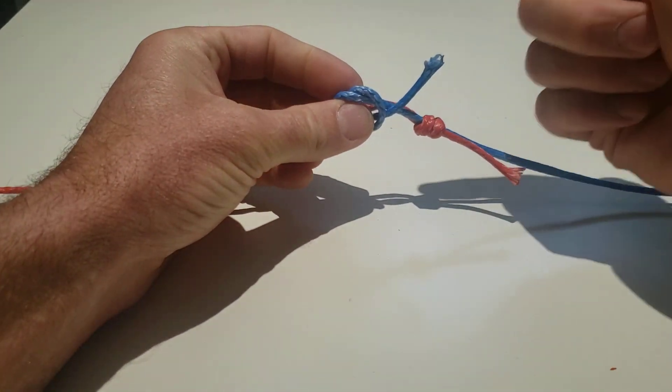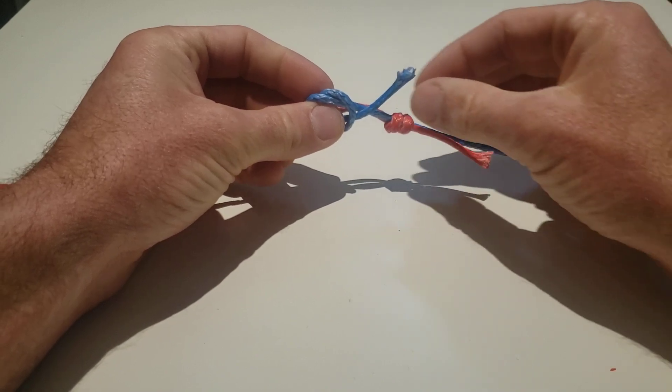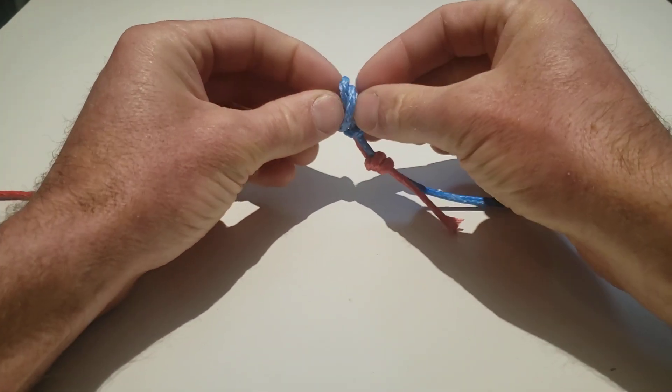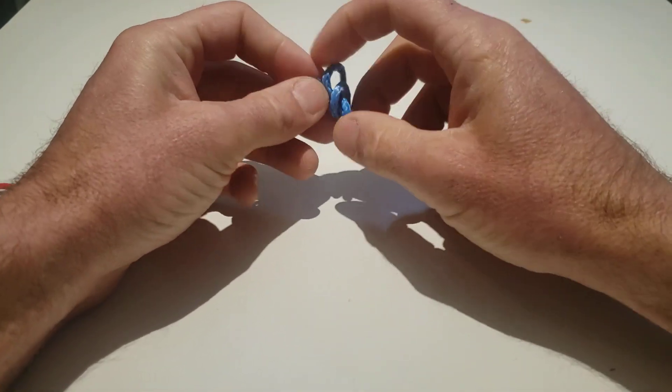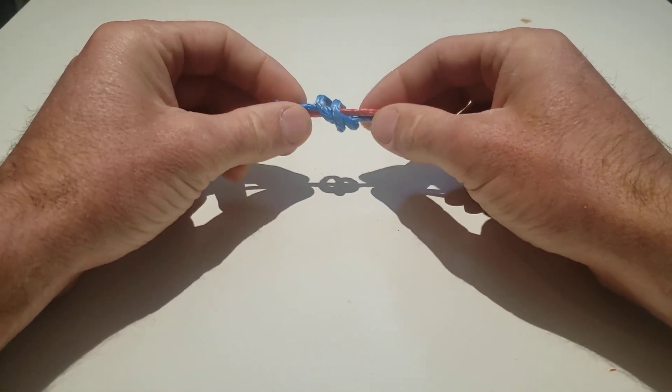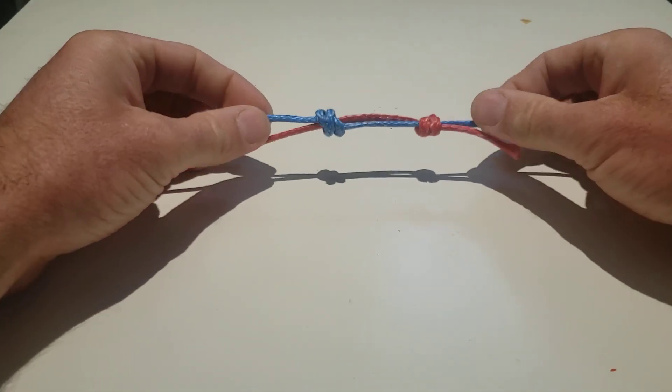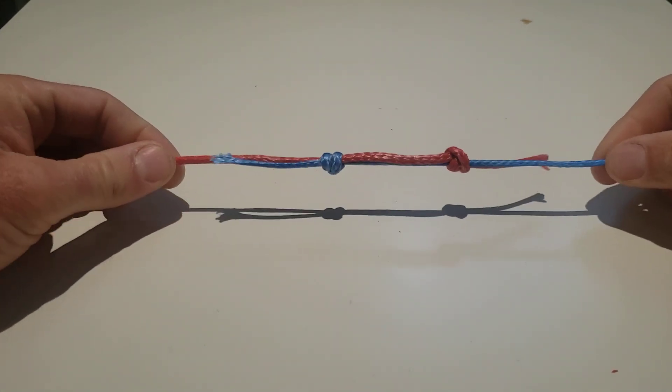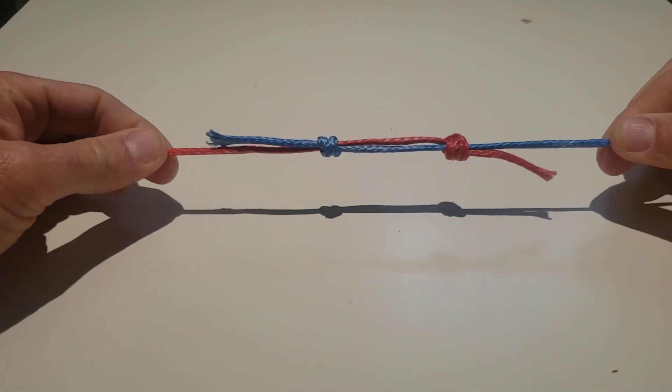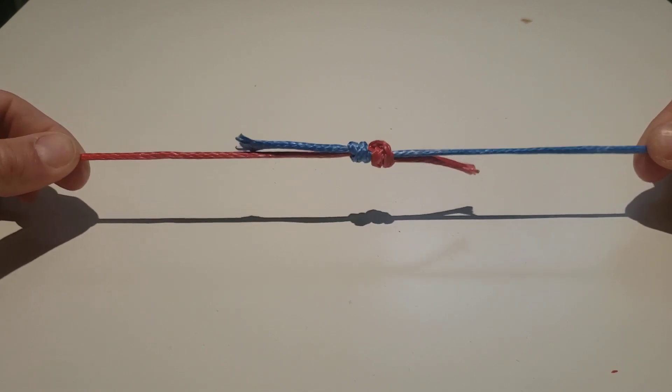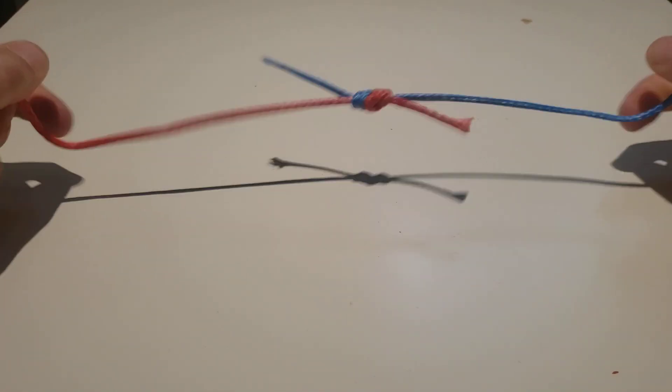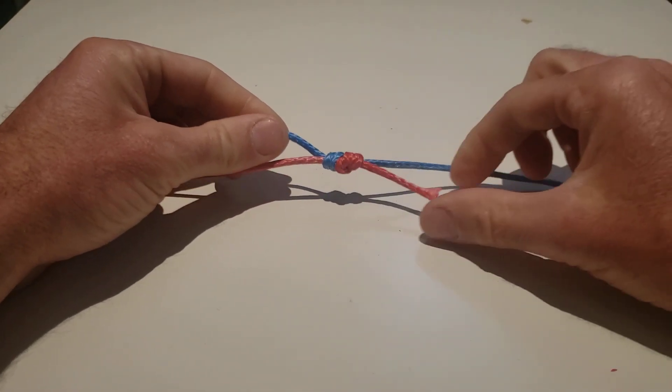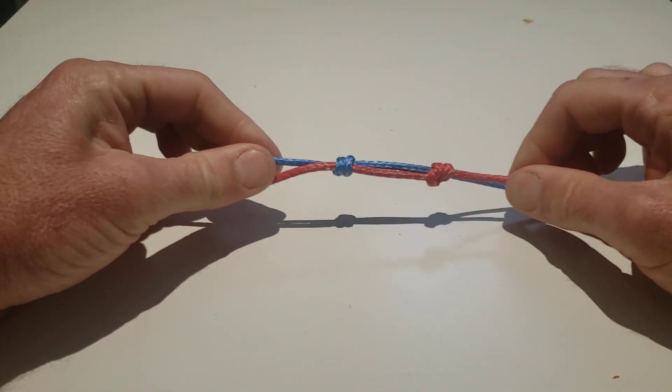And once again, the blue line was running to the left so I'm going to run it in that direction. Take the two blue lines, pull them tight, and then we have two slip knots on each other. So I can pull those together nice and tight, and if it's done right you can pull them apart.